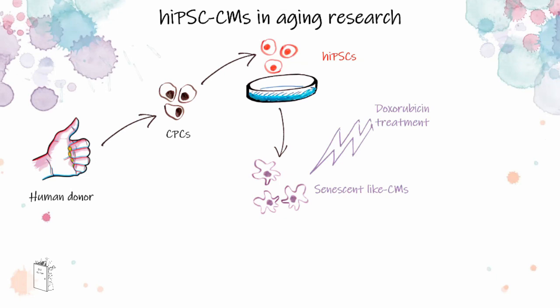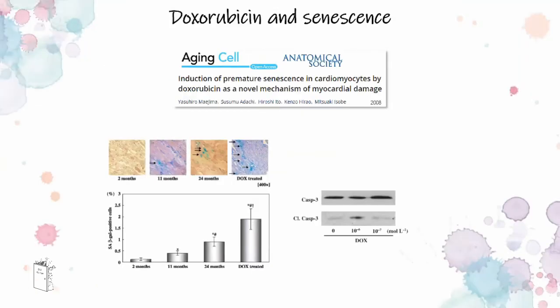I am linking cardiomyocytes from iPS cells to aging by creating a human in vitro model of cardiac senescence. To age my cardiomyocytes, I use a pulse of doxorubicin, which is a chemotherapy drug with cardiotoxic effects. This model has been inspired by work from 2008 in which the authors demonstrated that neonatal rat cardiomyocytes treated with sub-apoptotic doses of doxorubicin have a phenotype similar to cardiomyocytes from aged rats, with high positivity to senescence-associated beta-galactosidase but low apoptosis.